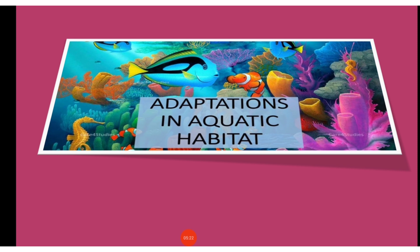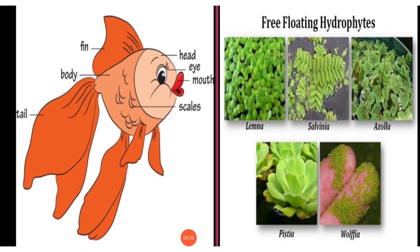Now the next point is adaptation in aquatic animals and plants. Aquatic animals like fish have a streamlined shape which helps them to move easily in water. The presence of slippery gills helps in utilizing dissolved oxygen. Flat fins and tail help in changing direction in water.